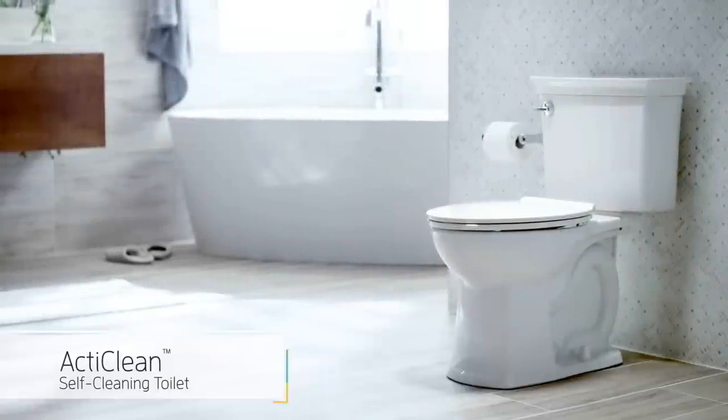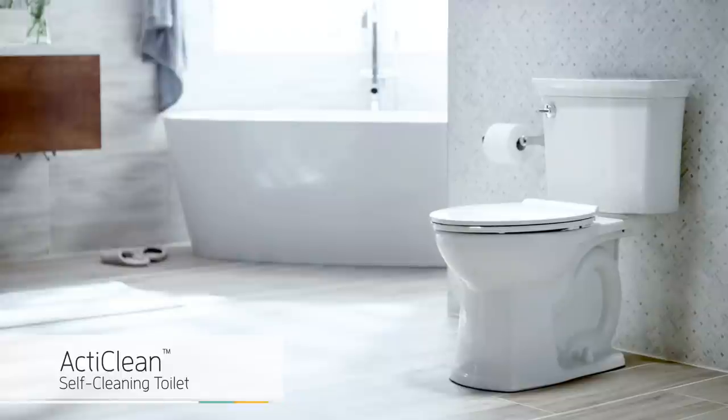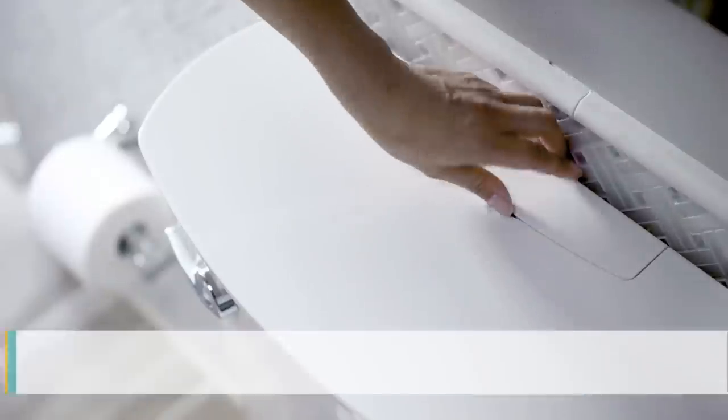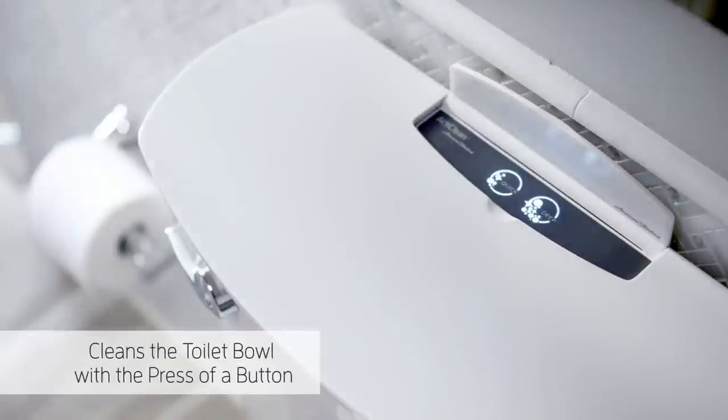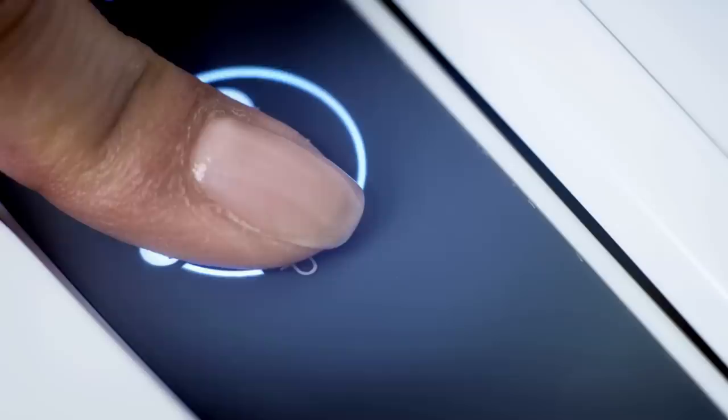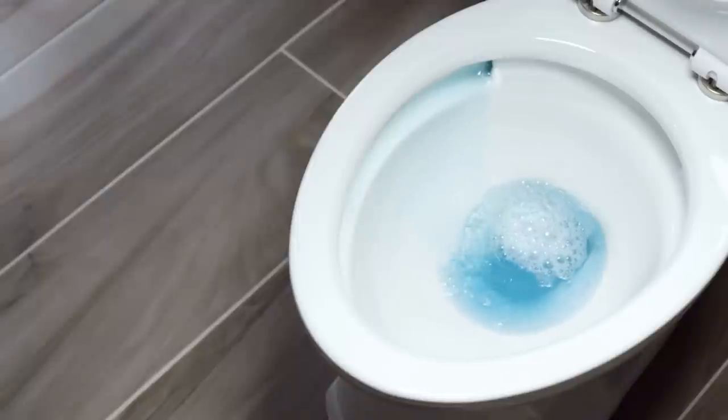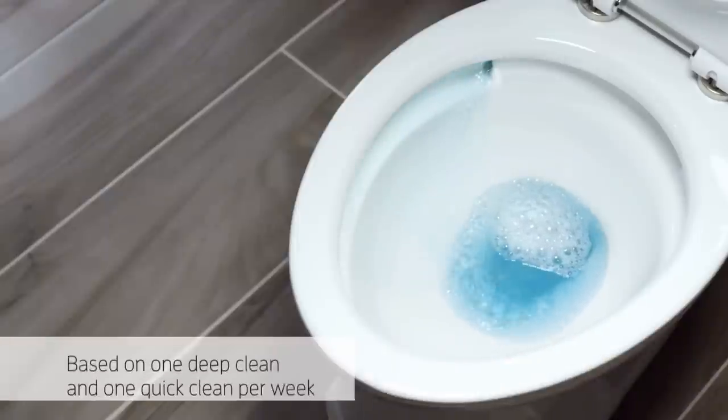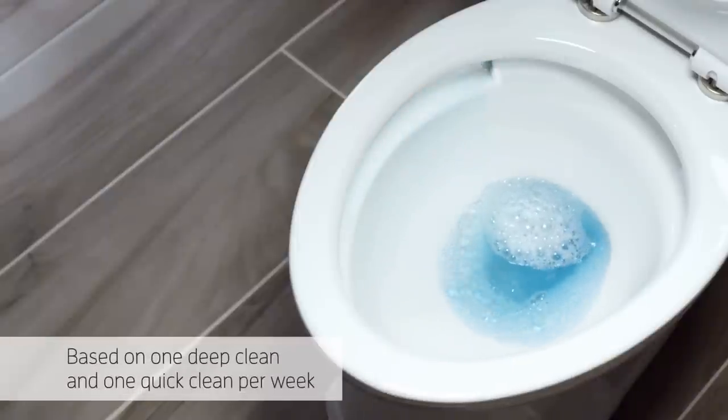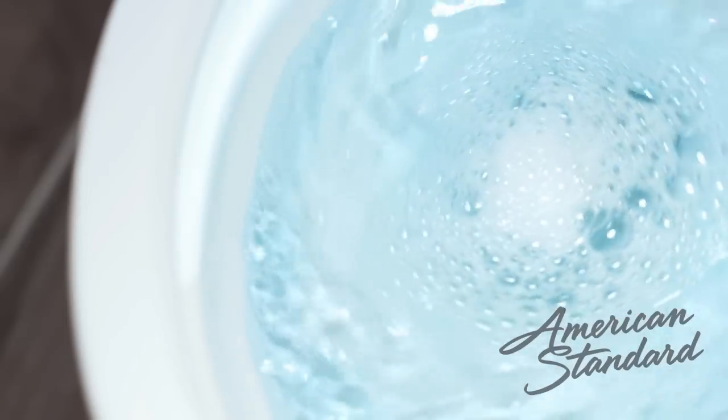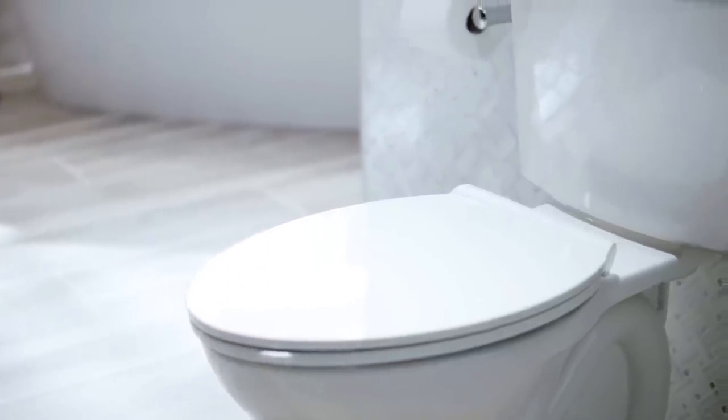Introducing the first self-cleaning toilet by American Standard, the ActiClean Toilet. ActiClean features a self-cleaning system that cleans the toilet bowl with a simple press of a button. It cleans and removes stains for more than two months with the cleaning power of the onboard cleaning solution, leaving a freshly scented sparkling clean bowl.